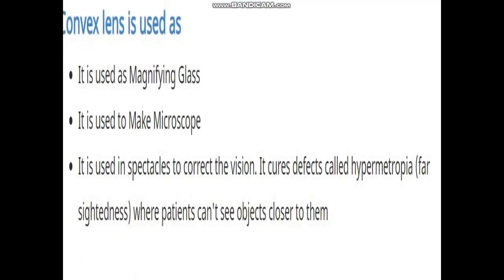Convex lens is used as a magnifying glass and used to make a microscope. It is used in spectacles to correct vision. It cures the defect called hypermetropia, or farsightedness, where patients can't see objects closer to them.